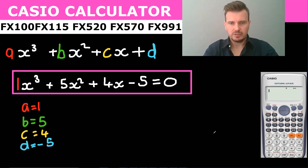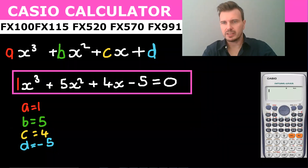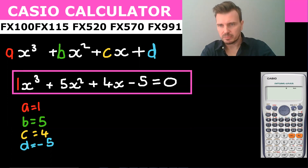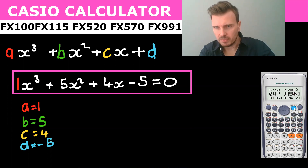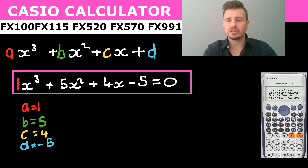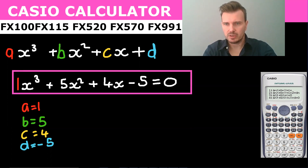What I need to do is get into the right mode. I push the mode button and go to the equation mode and choose 4, because that's the one with the ax cubed.